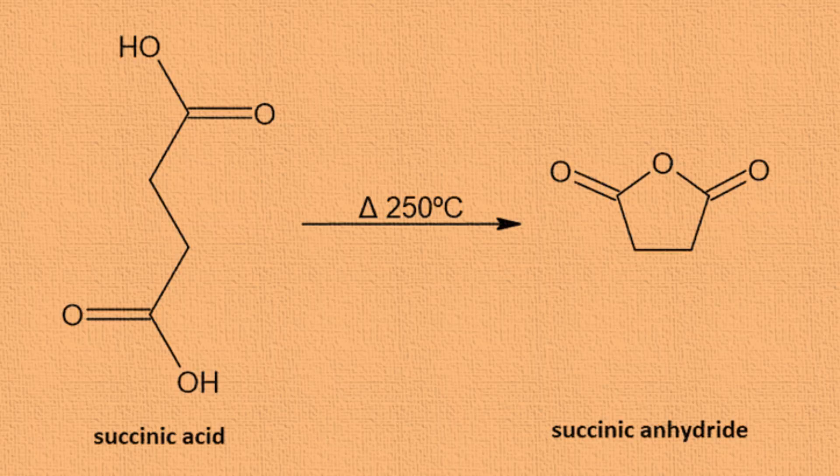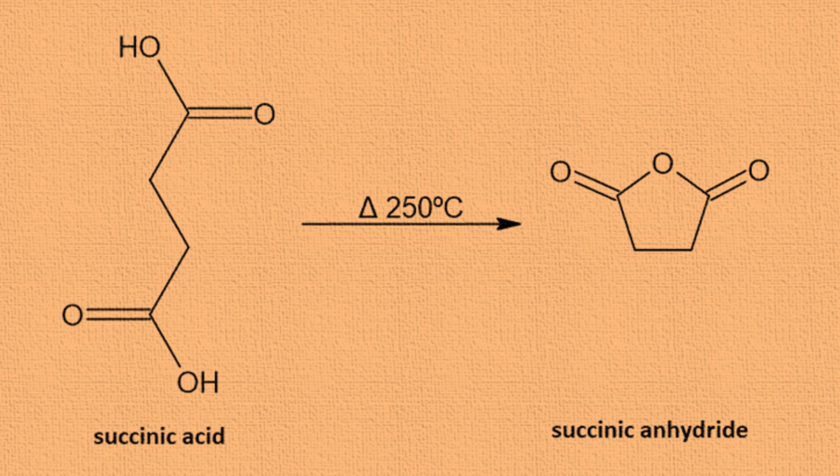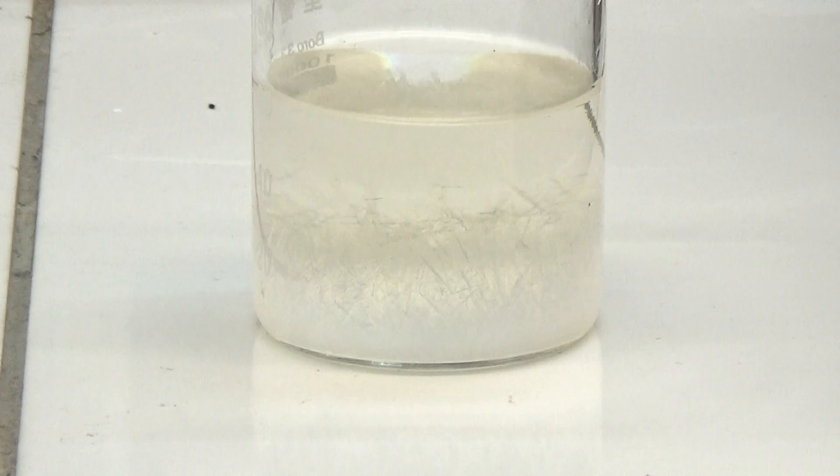In the first process that I will show, the yield is lower. The obtaining of succinic anhydride involves eliminating a molecule of water by heating succinic acid to more than 250 degrees. We use affordable and cheaper solvents like 100% acetic acid and ether to isolate it.